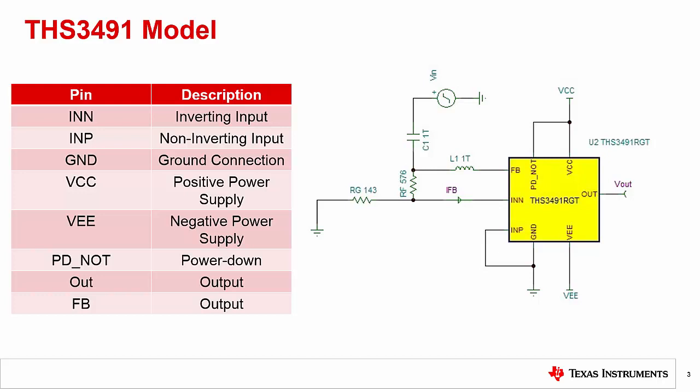While most of the pin descriptions shown in the table are straightforward, the power down and feedback pins may cause the most confusion. In order for the device to function properly, the power down pin must connect to a voltage of 1.5 volts or above; otherwise, the THS3491 will enter a power down state. For the purposes of this video, we will tie the power down pin to our positive supply. The feedback pin, FB, and output pin, Vout, have an internal connection within the model — essentially, both pins function as the same node.